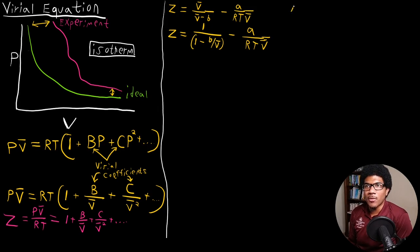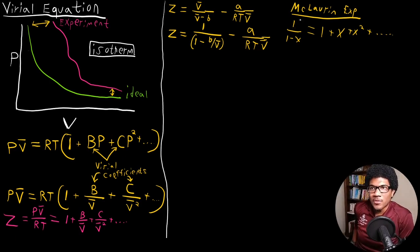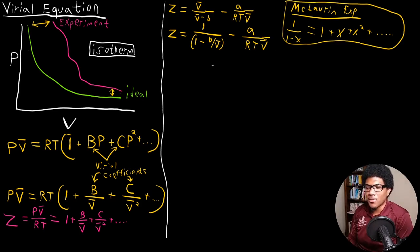A McLaurin expansion is a series expansion on terms that look like this: 1 over (1 minus x) can be expanded as 1 plus x plus x squared plus dot dot dot. In order to do this expansion, I had to get the expression into this form. So I've gotten it into this form so I can do the expansion of this first term.